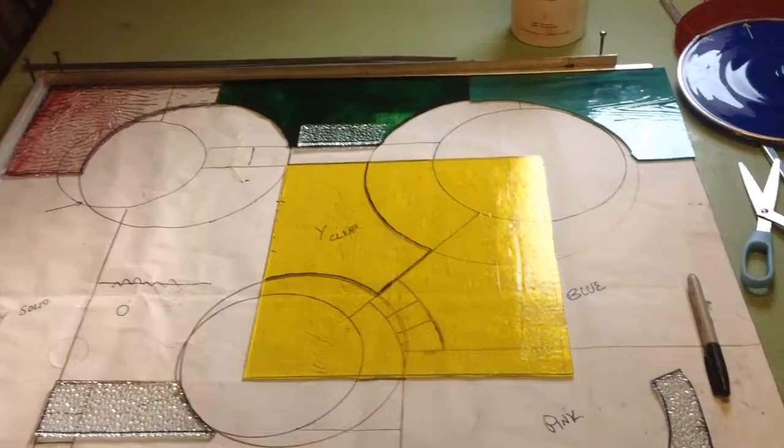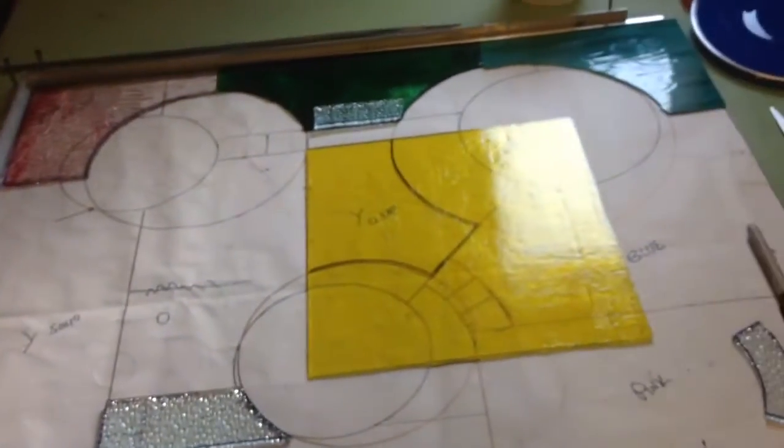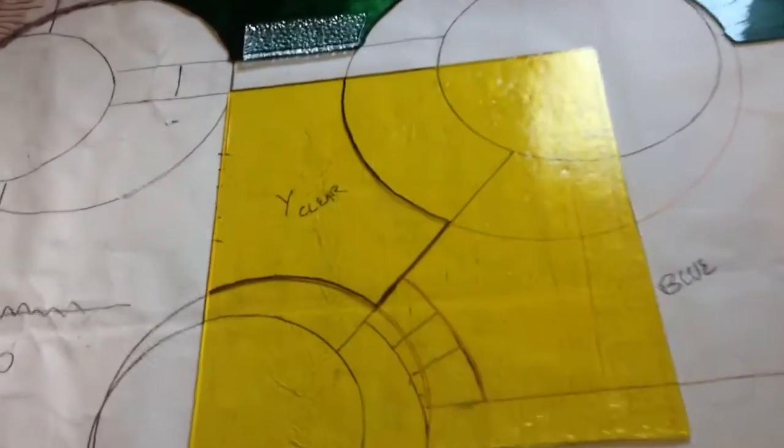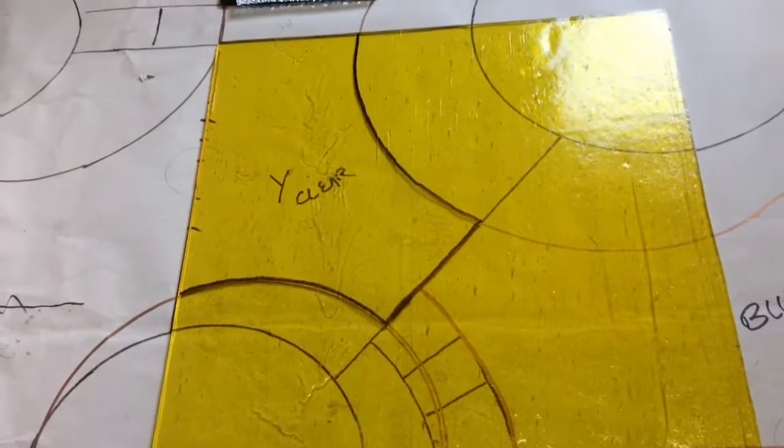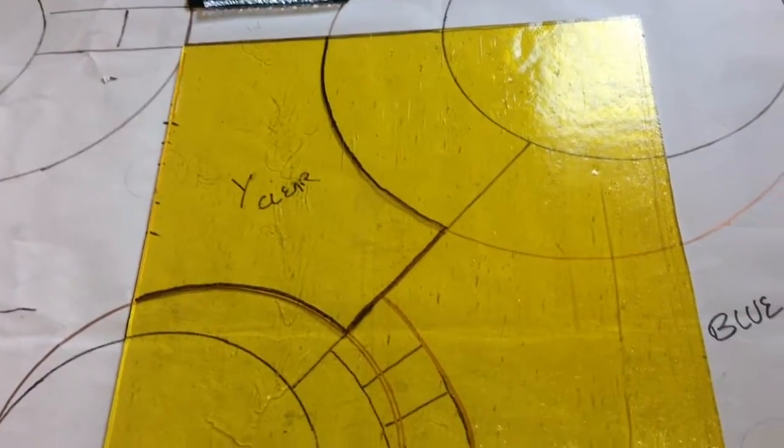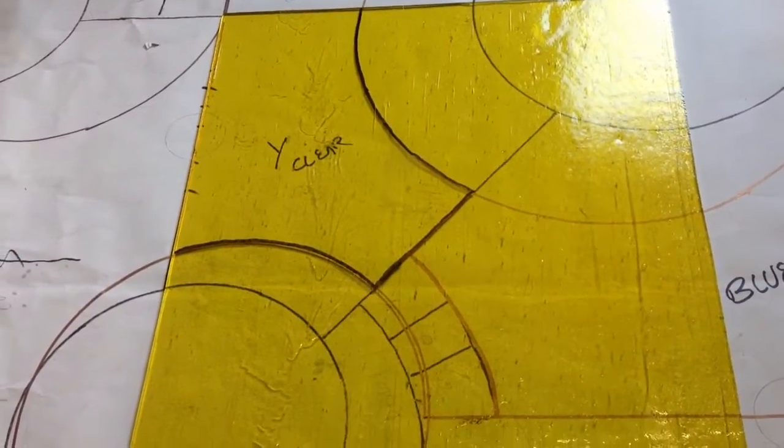Okay, so as you can see, I have several pieces that are finished, they're cut. This clear piece shows you that sometimes you can just place it on the pattern and trace the pattern right onto it.